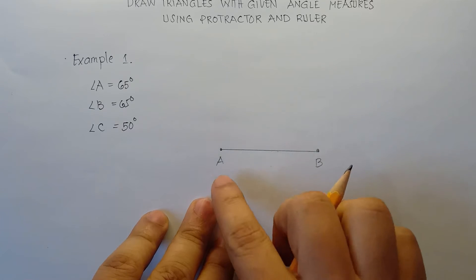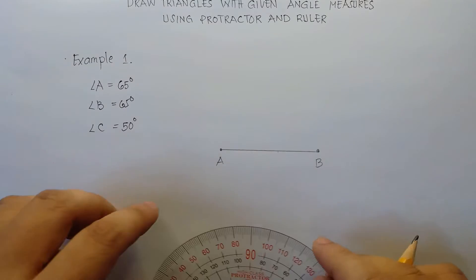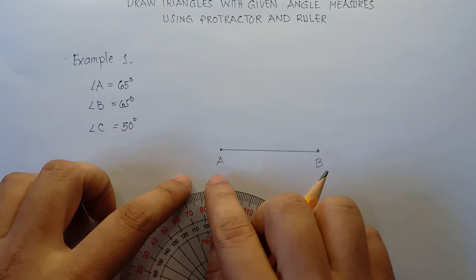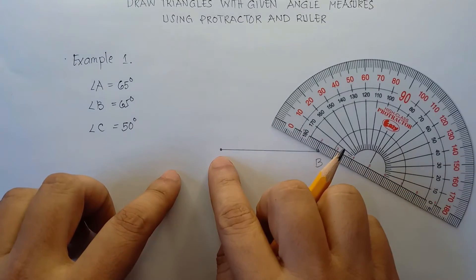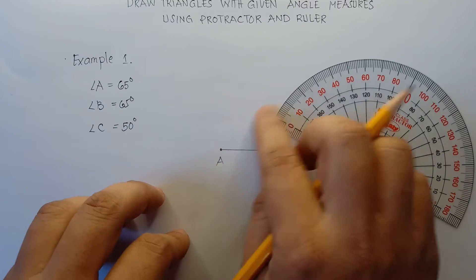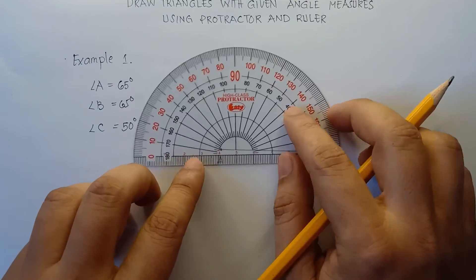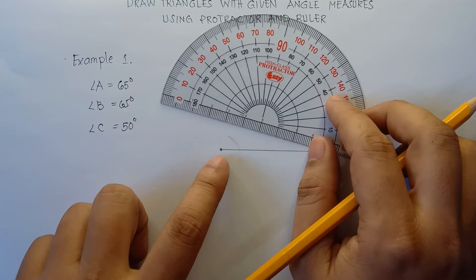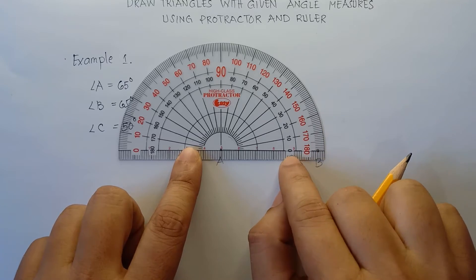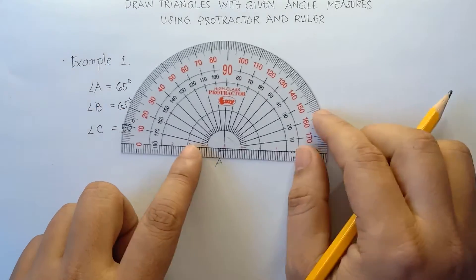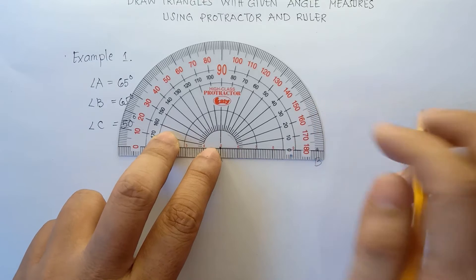So angle A will be here and angle B will be here. Next step is you use your protractor to draw angle A. You align the center part of your protractor at point A, and then align 0 in this horizontal line. Our angle A is 65 degrees.